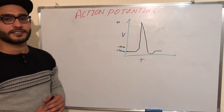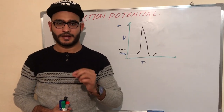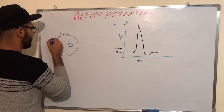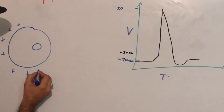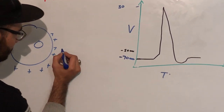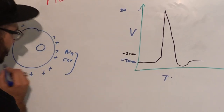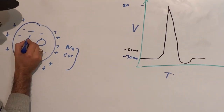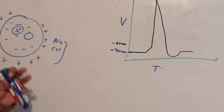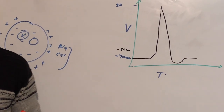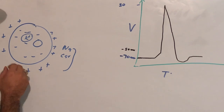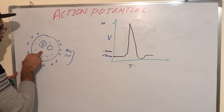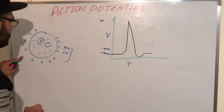Today our topic is the action potential — the potential at which impulses pass into the cell membrane. Outside the cell membrane is a more positive charge because the concentration of sodium and calcium is high. Inside the cell membrane it is more negative. The reason is the negative charge of proteins, carbohydrates, and lipids present inside the cell membrane, which keeps the cell negatively charged.